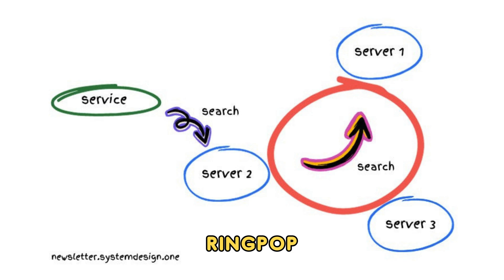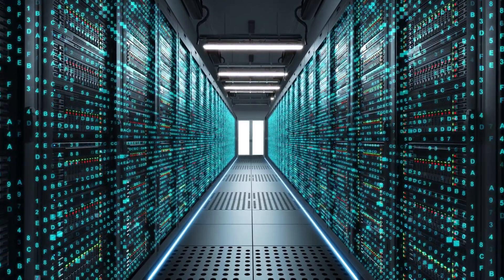They use RingPop to partition the services for scalability. RingPop is Uber's consistent hash ring module that uses Gossip protocol and gets embedded in application services. They use Gossip protocol to track the server membership list and server health status. A consistent hash ring lookup forwards a request to the responsible server. They scale writes by adding more servers, while reads are scaled by adding replicas. They use Thrift over Remote Procedure Calls for efficient communication. Every service is kept idempotent for high availability through retries, and they run a backup data center, routing traffic to it if the active data center fails.